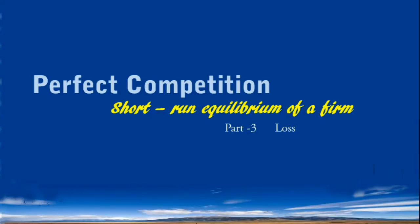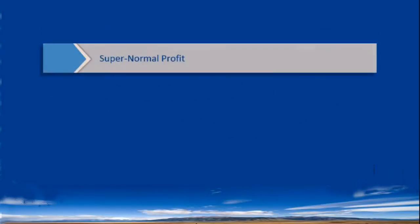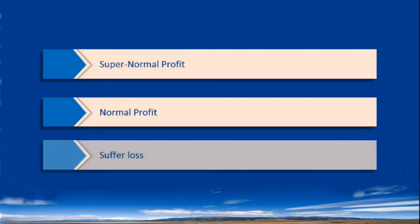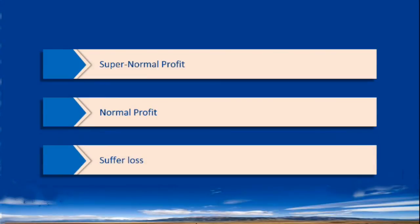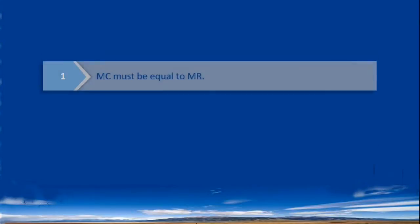Perfect Competition. Short Run Equilibrium of a Firm Loss. Yet one more possibility for the competitive firm in the short run is loss. Here also the equilibrium conditions are the same.